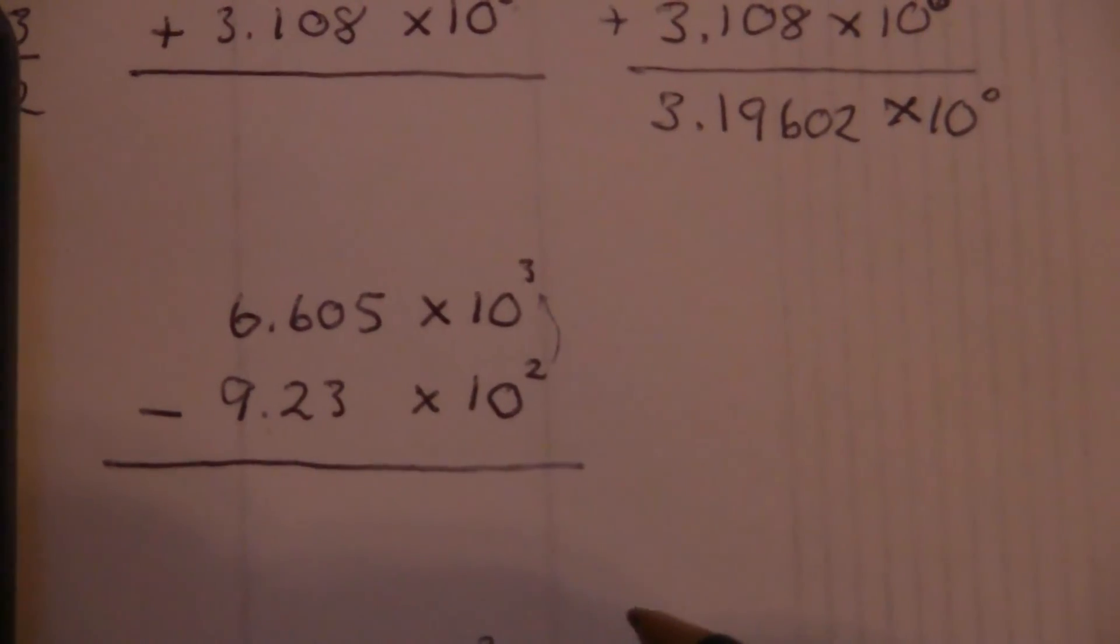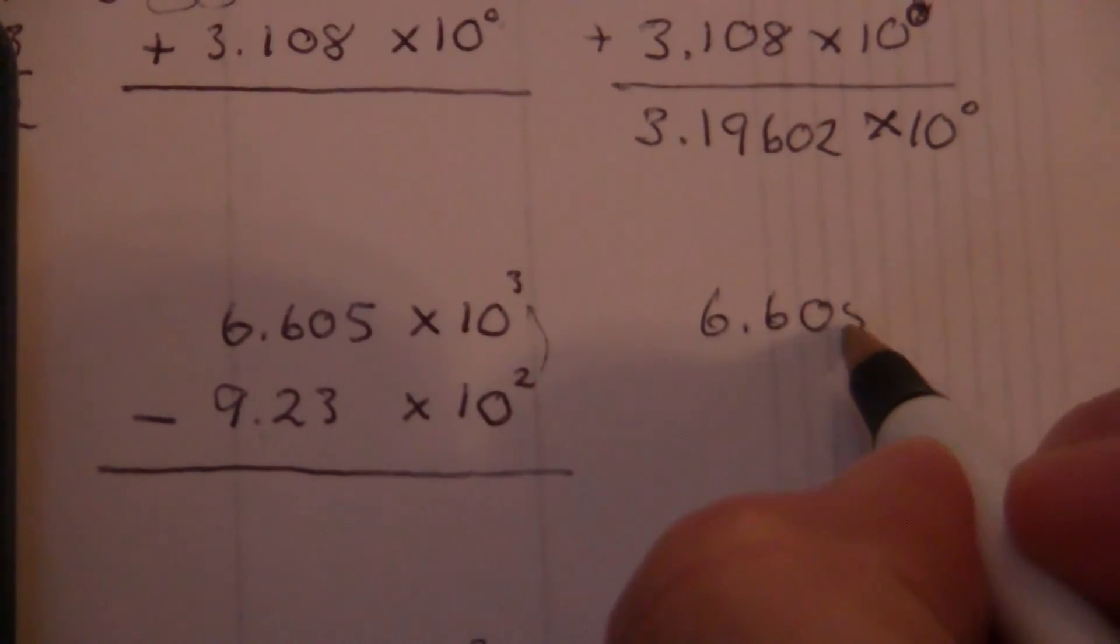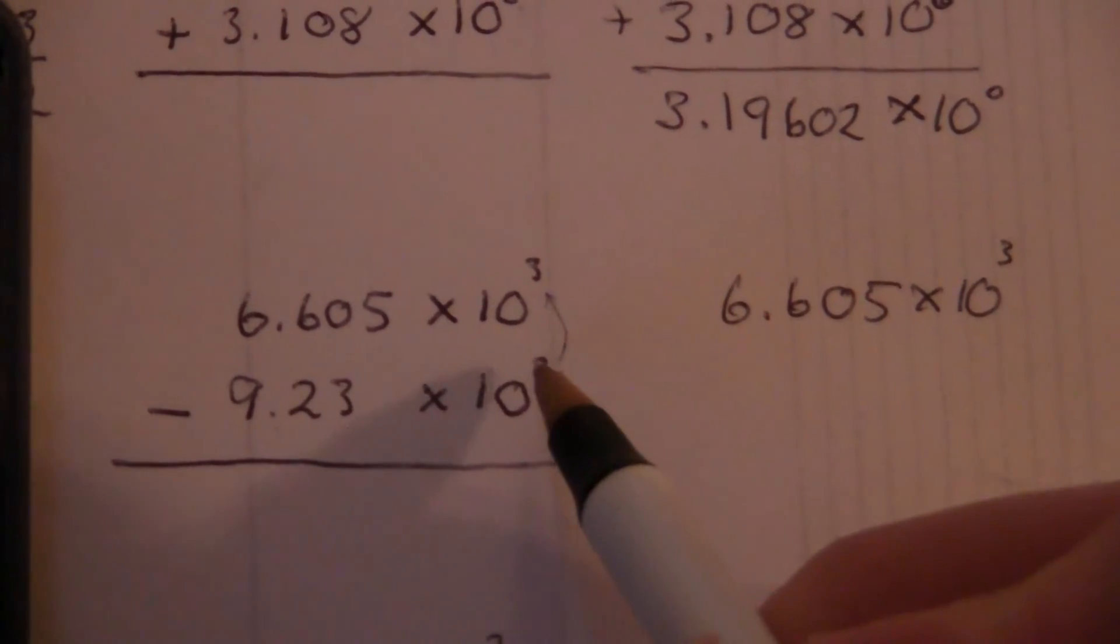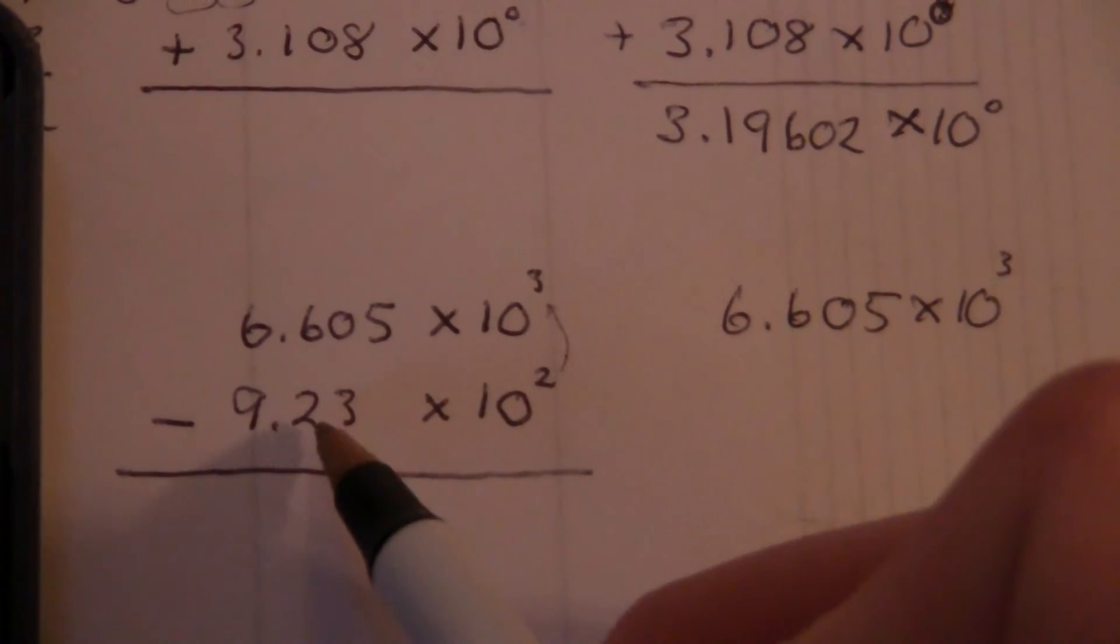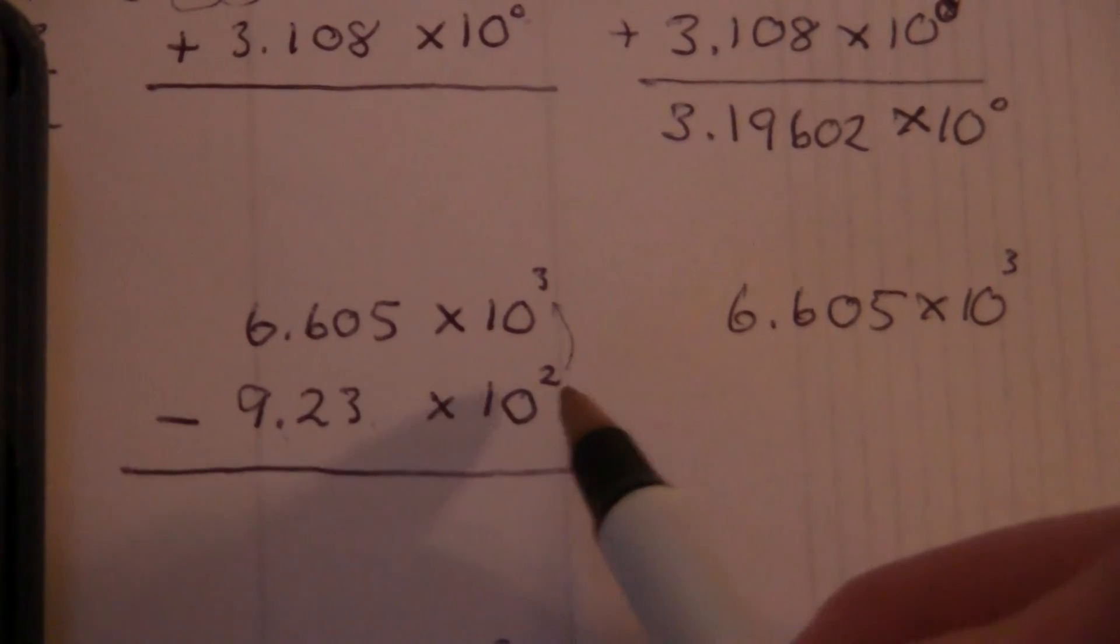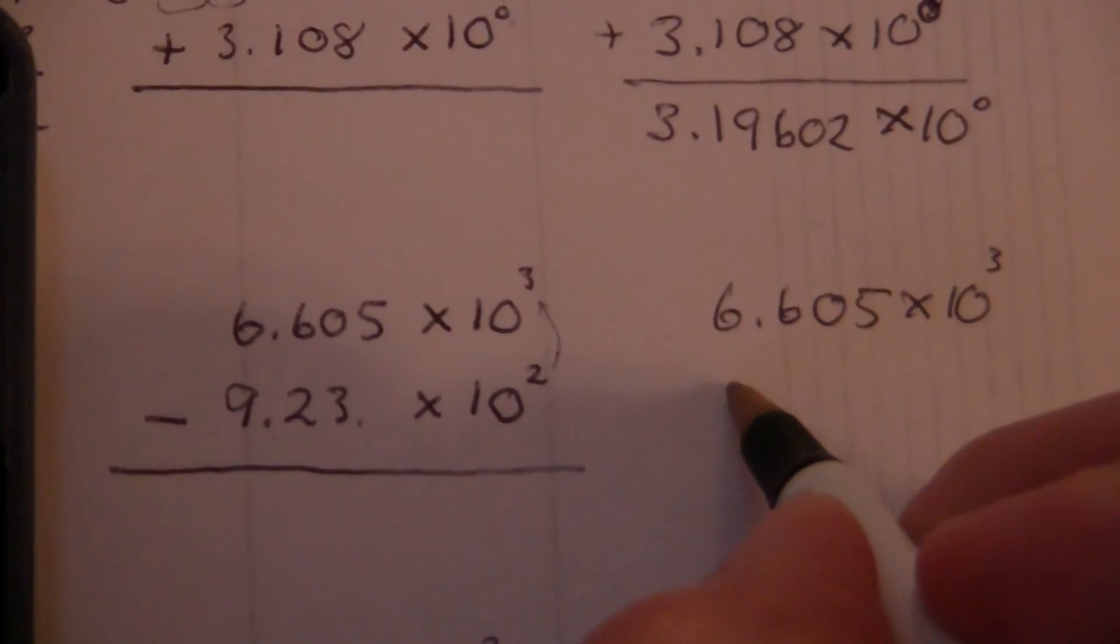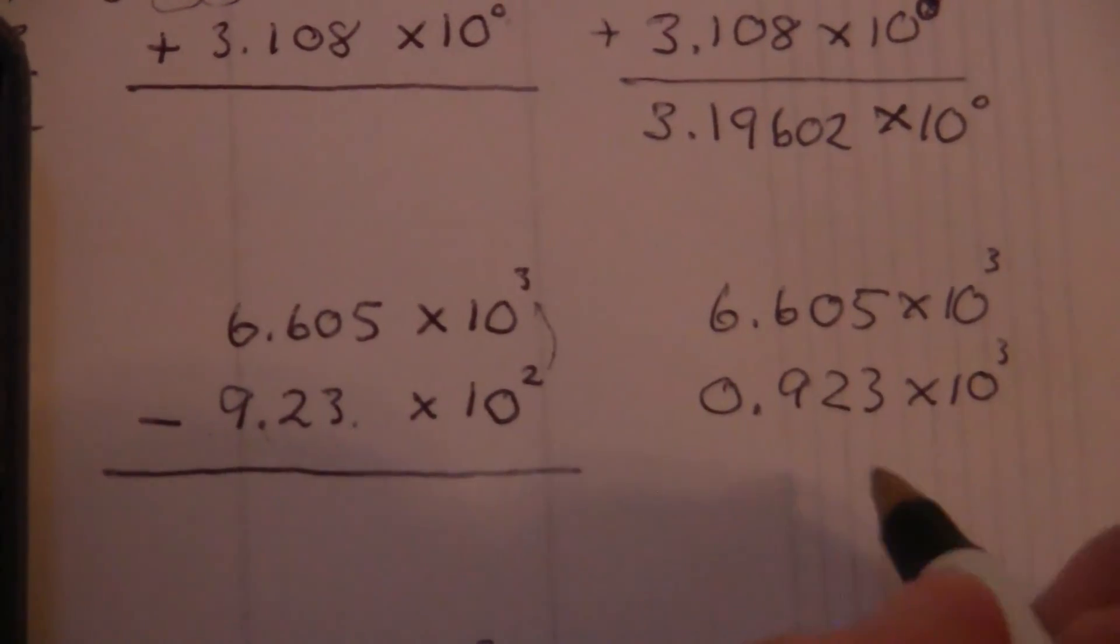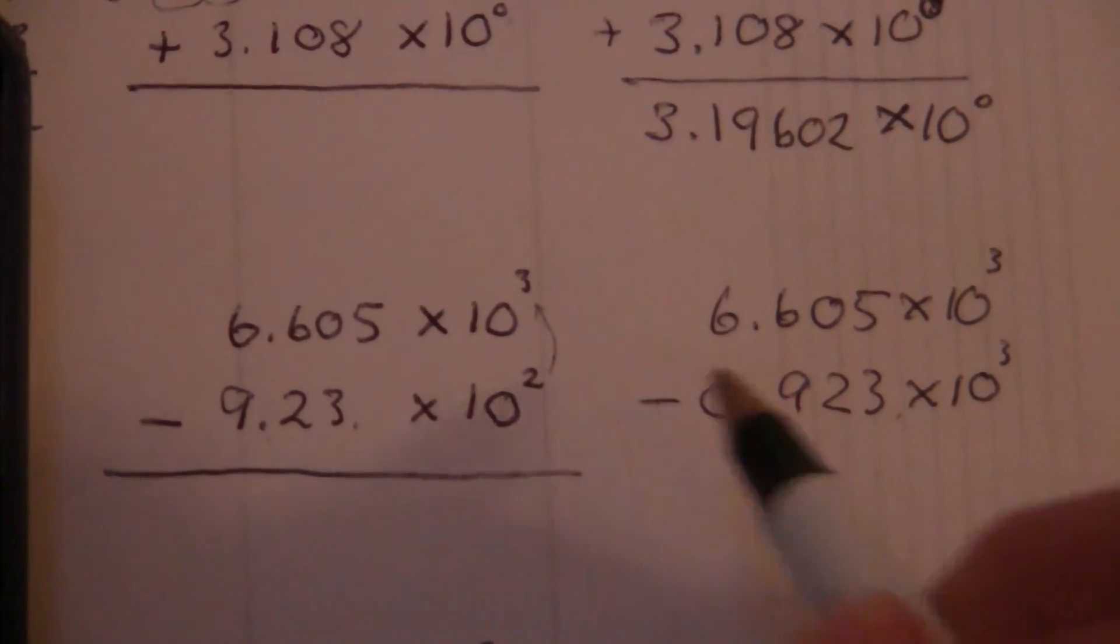But we're still going to convert the 2 times 10 to the 2 to a times 10 to the 3, converting to the larger one. Now, if I move, what this is saying is I'm moving the decimal place from here two places to the right. And I want to move it three places to the right to get it to that same place as it is showing here. So that means in order to get it here, by moving it three places, it has to start out there. So 0.923 times 10 to the 3rd. Now I move it three places to get it after the 3, whereas here I just moved it two places to get it after the 3.